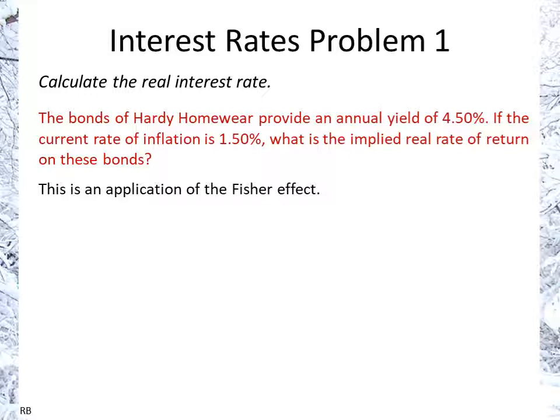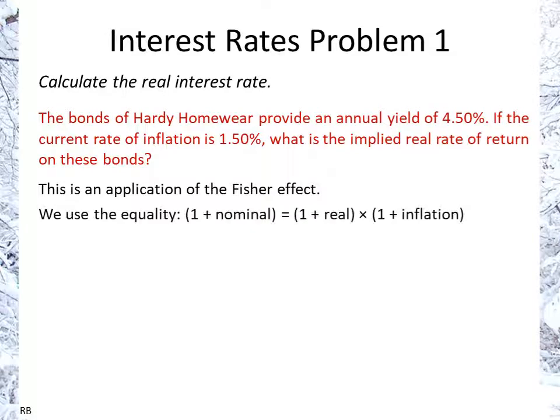The Fisher Effect makes the relation between the real rate of return — in other words, the economic gain — versus the nominal rate, in other words what we see as the yield, which is the 4.5%. The relation is: 1 plus the nominal rate equals 1 plus the real rate, times 1 plus inflation.